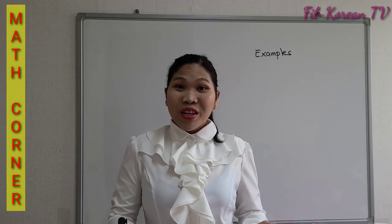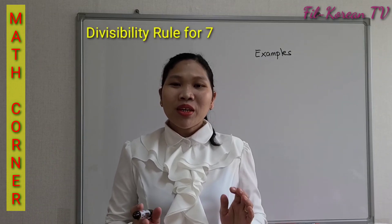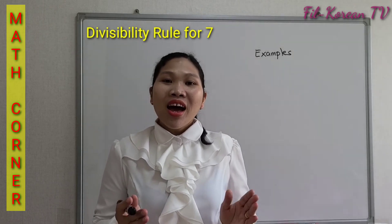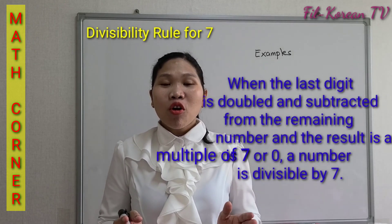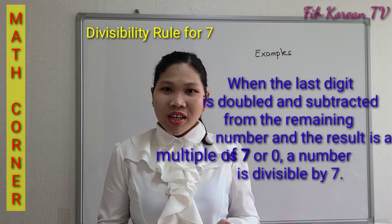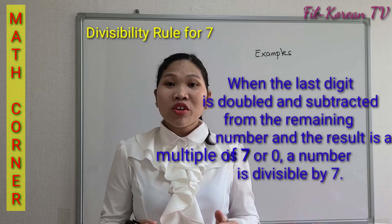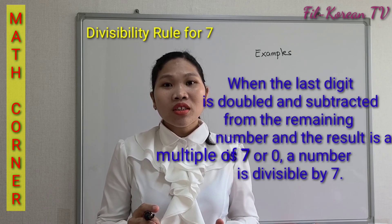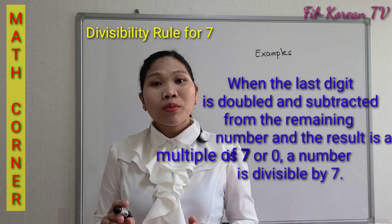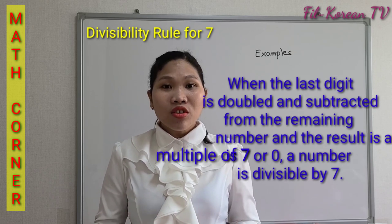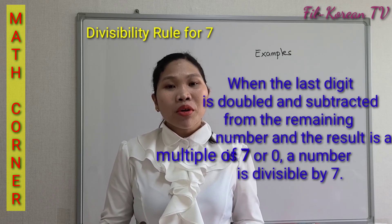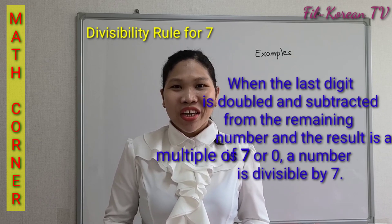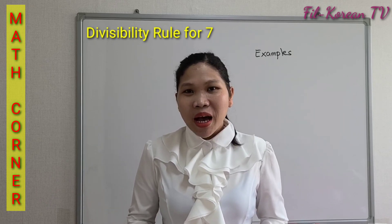Let's proceed to the divisibility rule of seven. When the last digit of a number is doubled and subtracted from the remaining number, and the result is a multiple of seven or zero, the number is divisible by seven. Let's look at some examples.